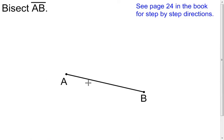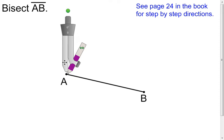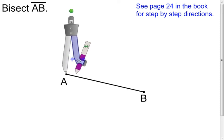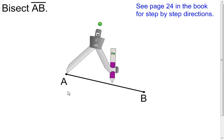Now I want to bisect a segment — think about what bisect means: it means cut it into two congruent pieces. Take your compass, put the point at one of the end points, then open up your compass. The only criteria is that the opening is more than half the length of the segment.